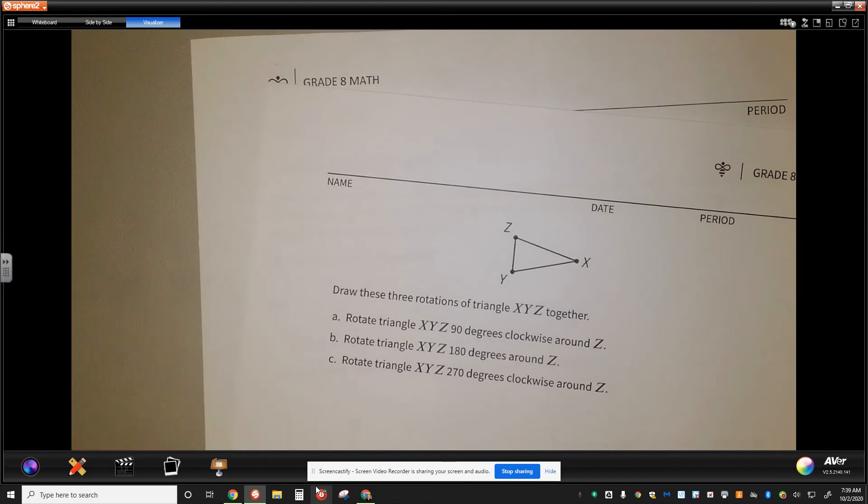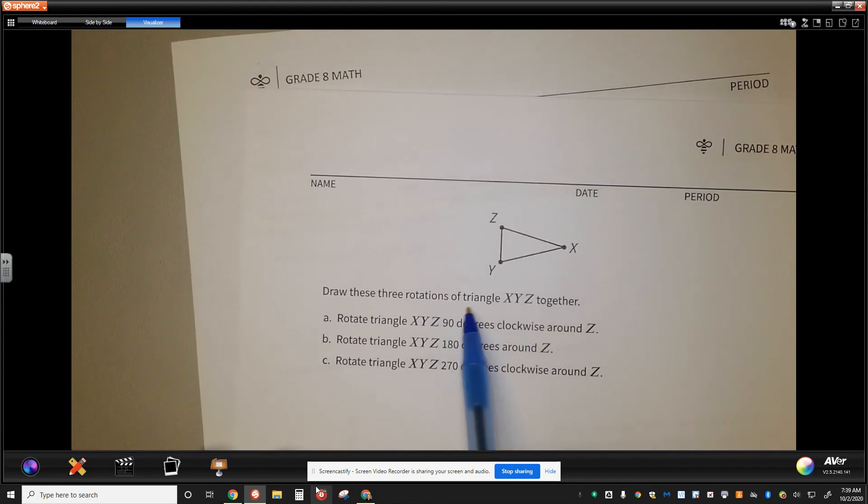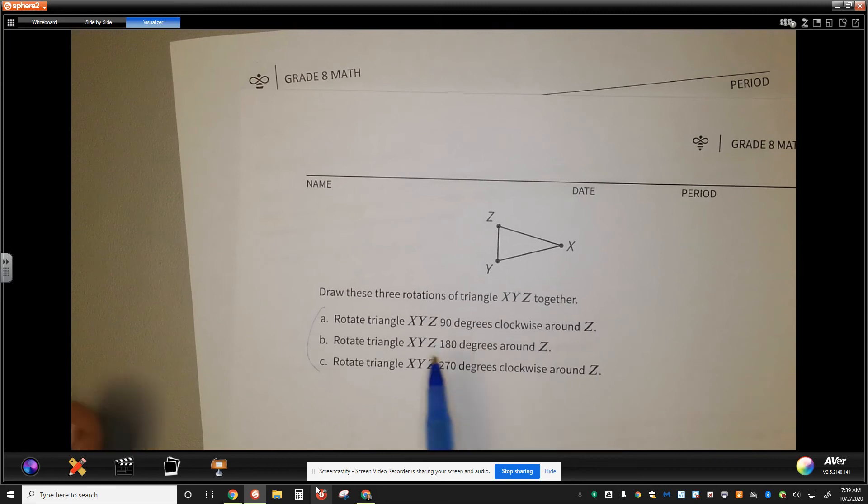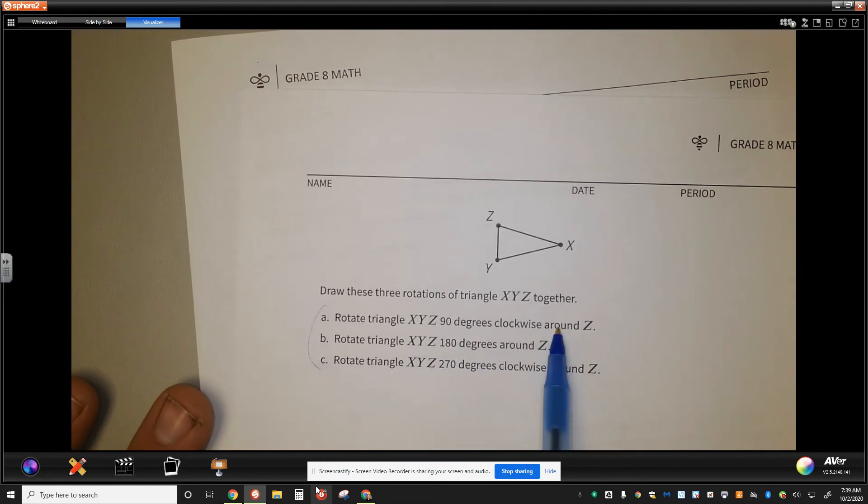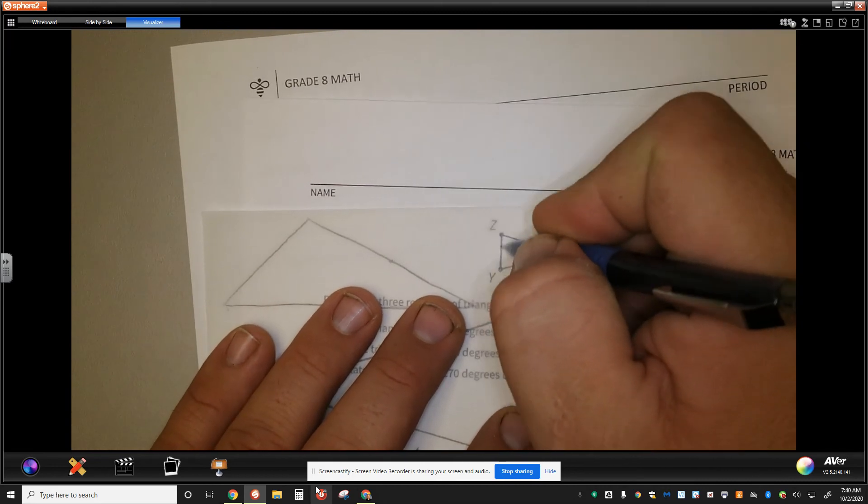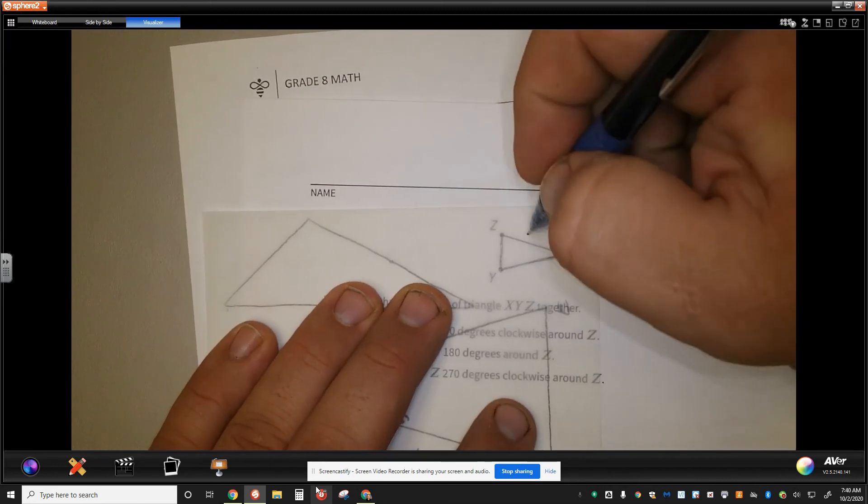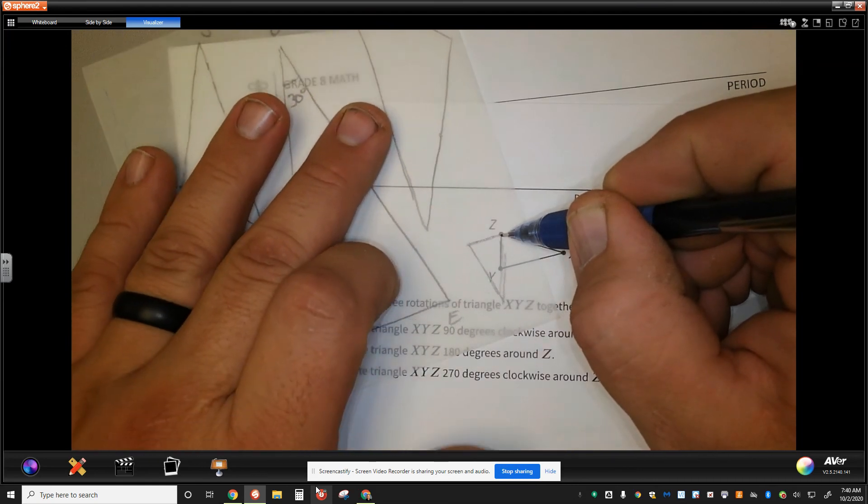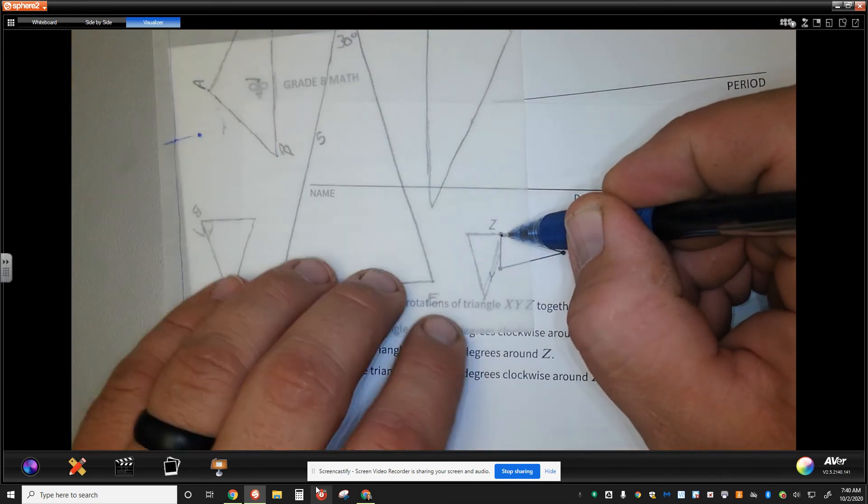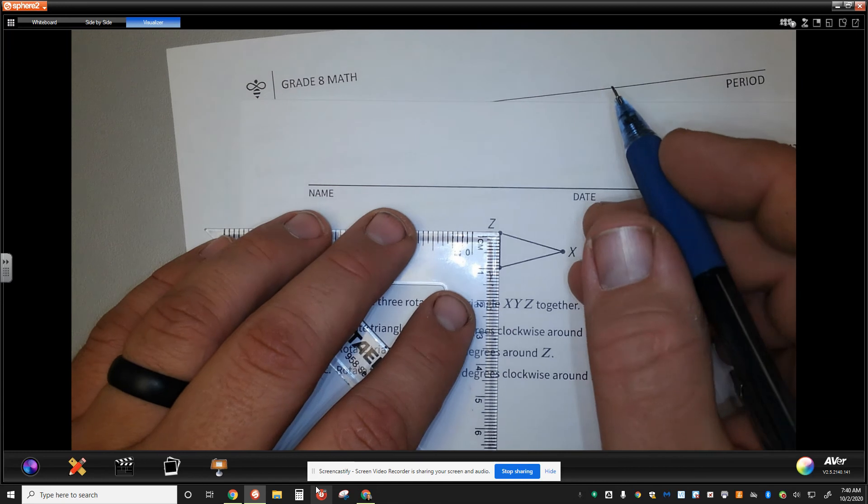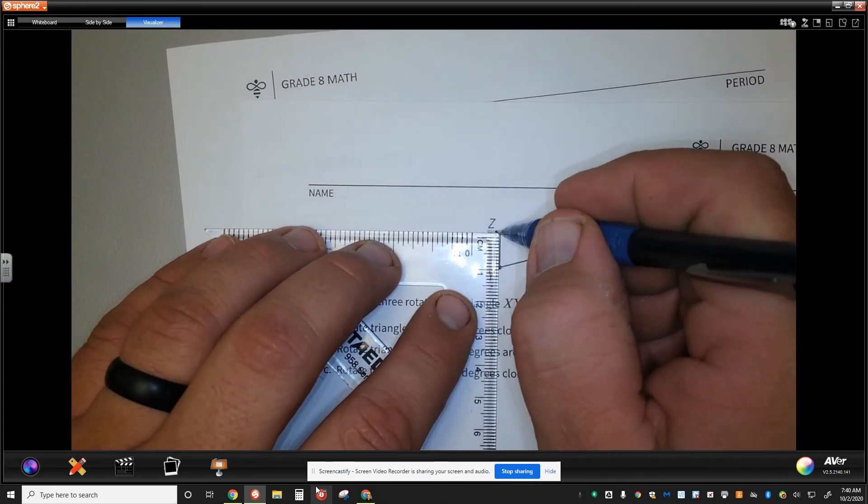Then here's the final piece. Here's triangle XYZ. Draw these three rotations of triangle XYZ together. So, we're going to do all three of these on the same picture. It says rotate triangle XYZ 90 degrees clockwise around Z. So, when we see that rotation of 90 degrees clockwise, we're going to see that this segment right here is going to help us to know that 90 degrees approximately. 90 degrees around Z clockwise is going to be 90 degrees this way. And we see that it's just a little bit further than that. So, we have to understand, well, where is 90 degrees? Take the corner of a piece of paper or something else and know that 90 degrees comes right here.